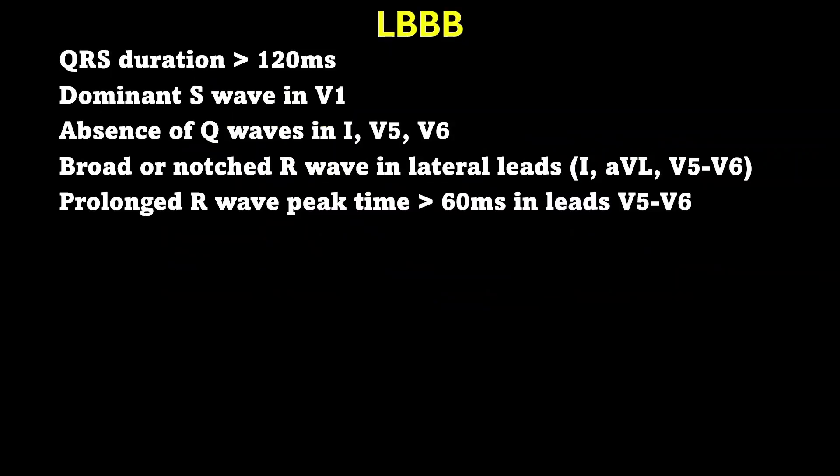So what is a left bundle branch block? The formal definitions include QRS duration over 120 milliseconds, dominant S wave in V1, and absence of Q waves in leads I, V5, and V6. In our normal conduction system, impulses travel down the left and right bundle branches with the septum being activated from left to right, which usually produces very small Q waves in our lateral leads. However, in a left bundle branch block, impulses travel first down the right bundle to the right ventricle and then to the left ventricle via the septum.